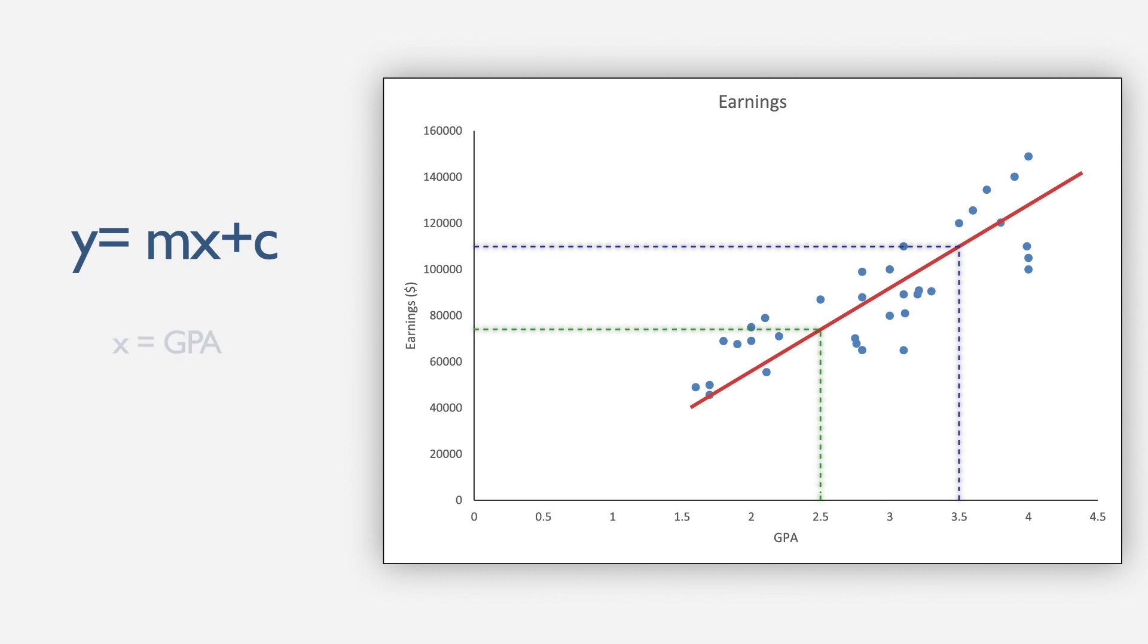Here in this graph, x is GPA and y is salary. That means you only have one independent variable, x that is GPA. But we can extend this model and make a formula like this.